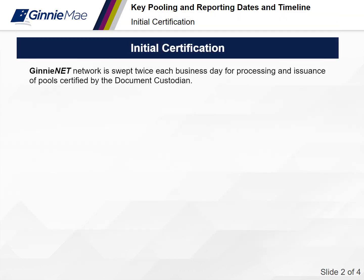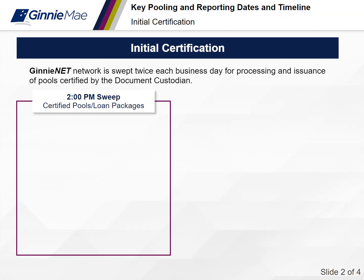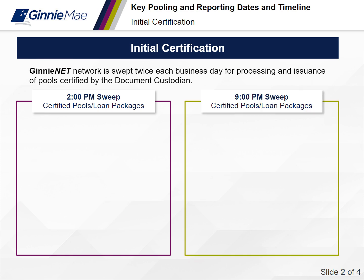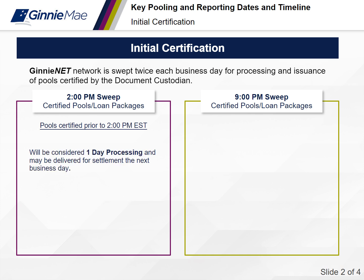We do two sweeps a day — a sweep at 2 p.m. and then another sweep at 9 p.m. Any pools with the status of certified will be downloaded at that time. The first section talks about certified pool/loan package. For multifamily, you don't have to deal with loan package. A pool certified prior to 2 p.m. Eastern Standard Time will be considered one-day processing and may be delivered for settlement the next business day.